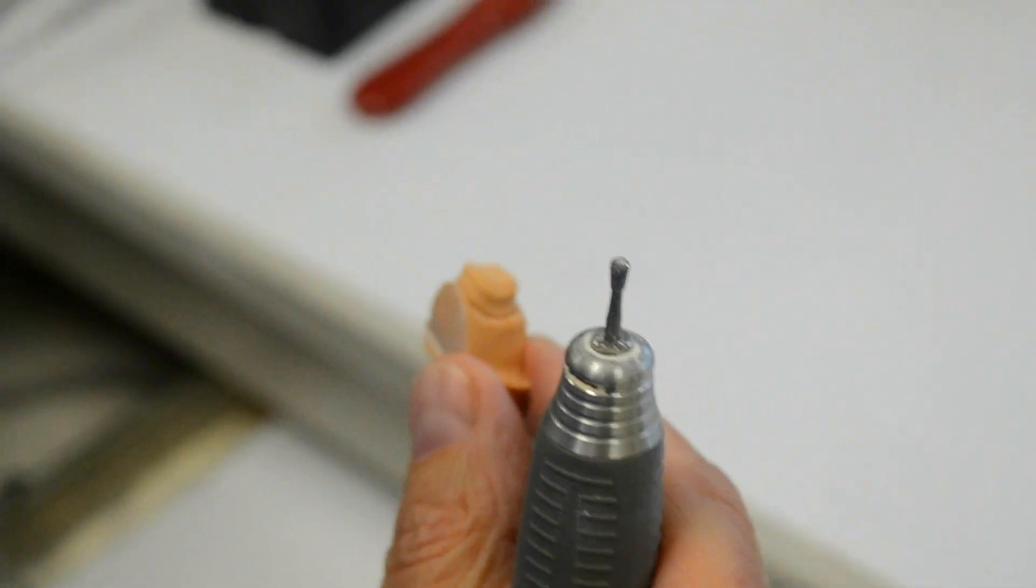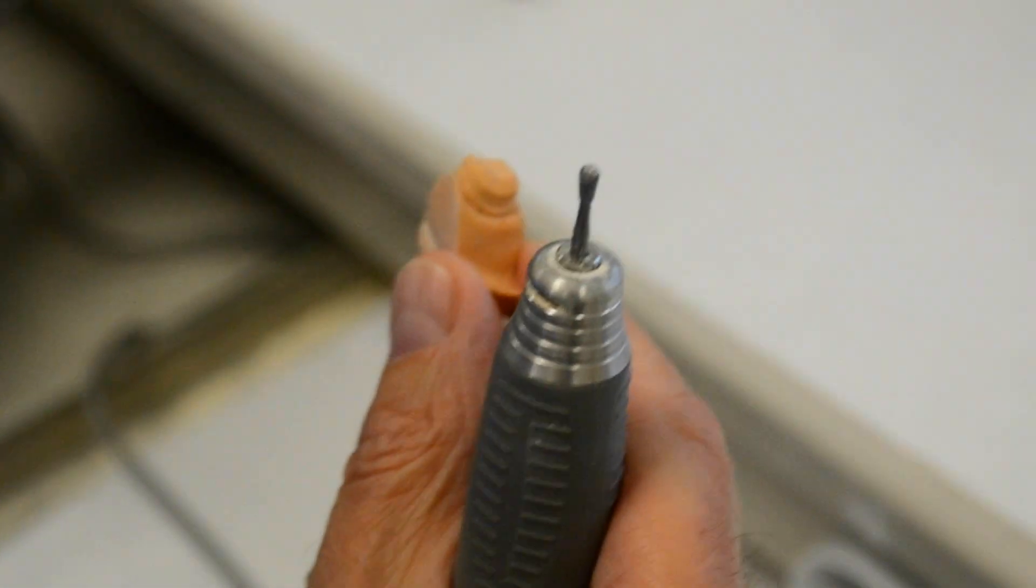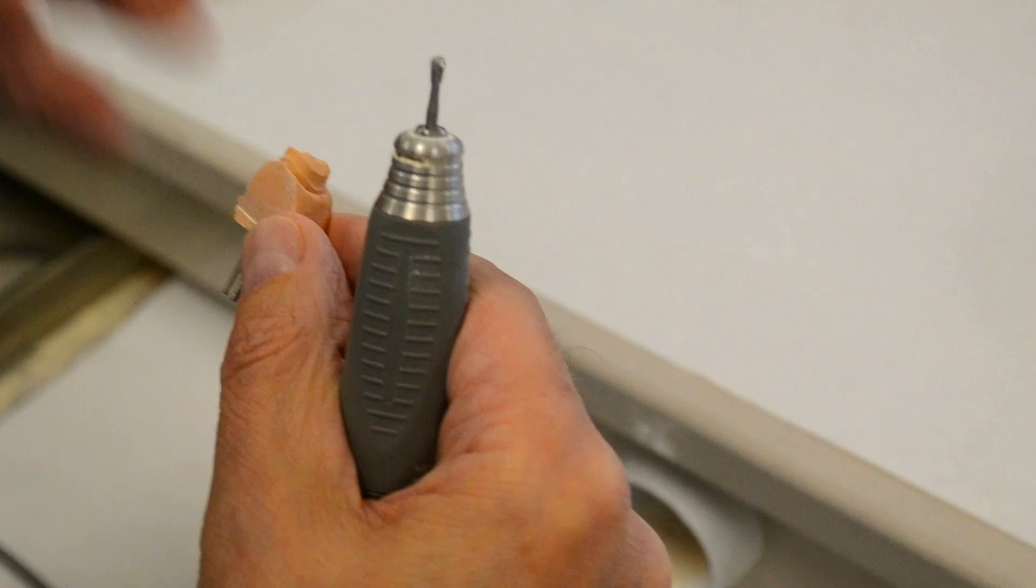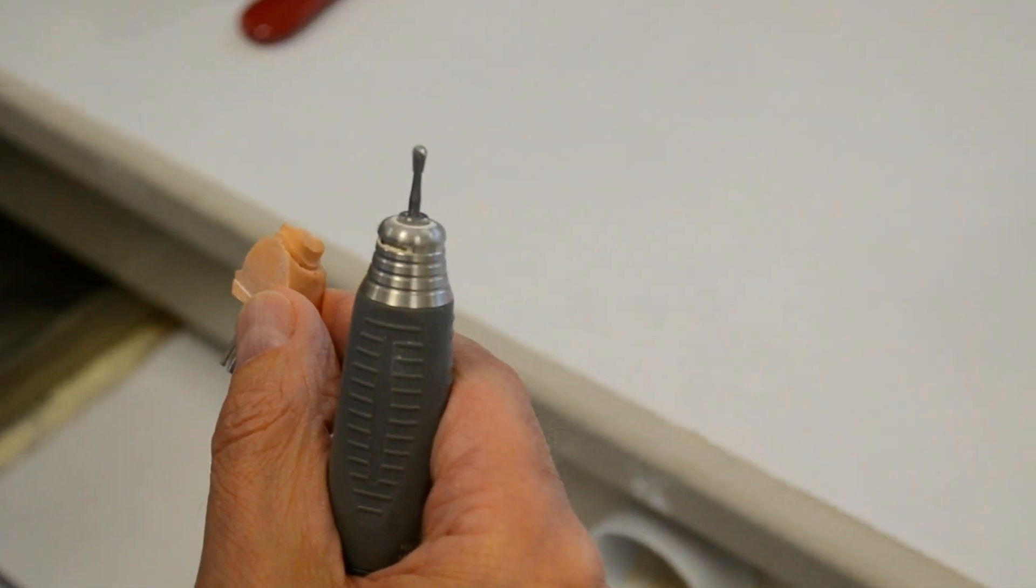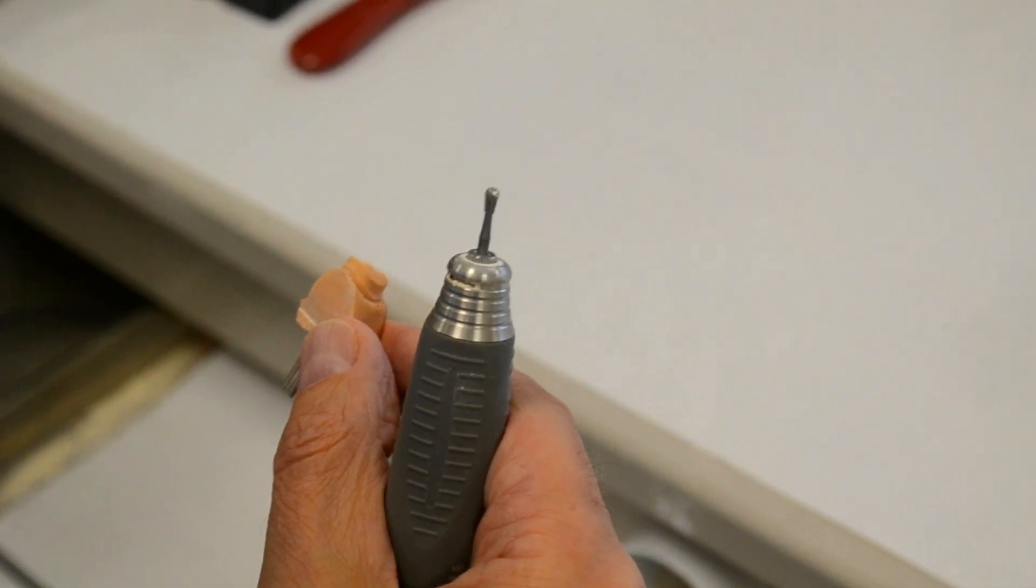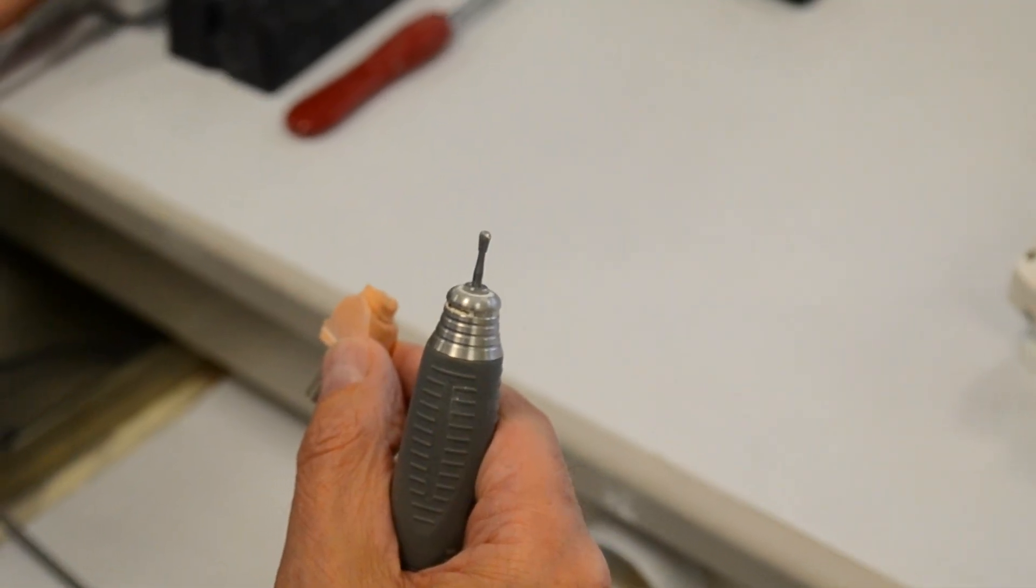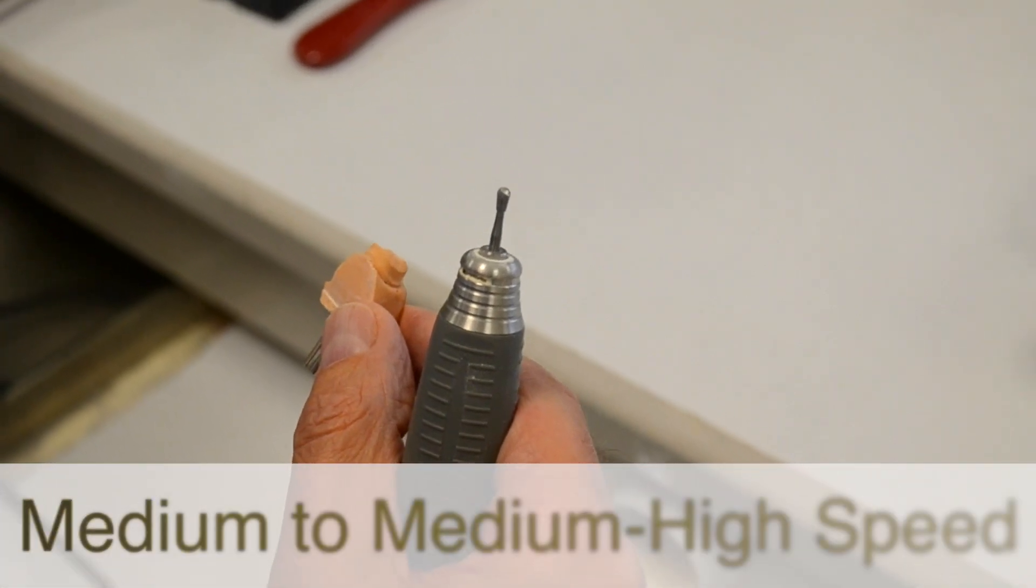So we're using our meal motor for this procedure. We'll turn on the meal motor at this point, and generally I will turn on the rheostat so the burr is rotating at either medium or high medium speed.